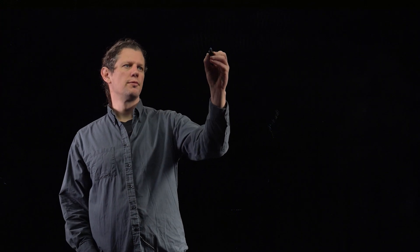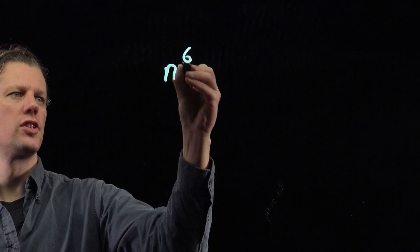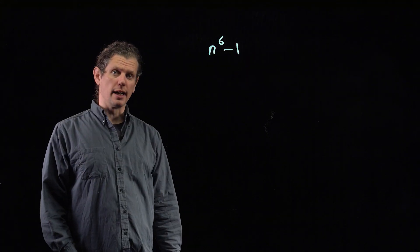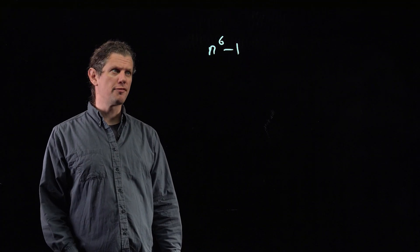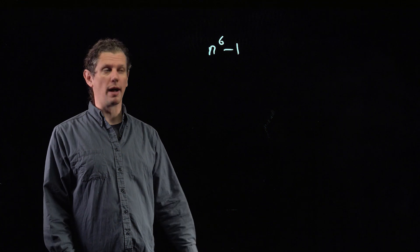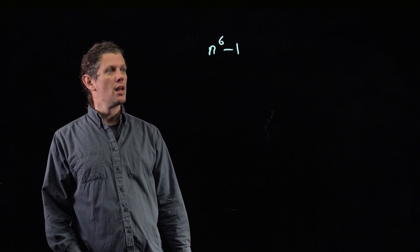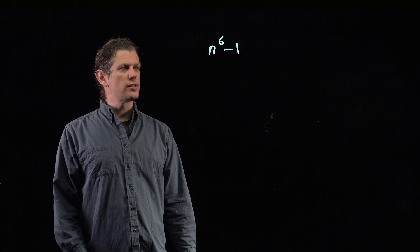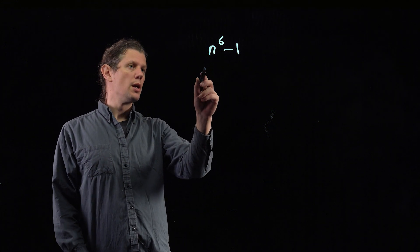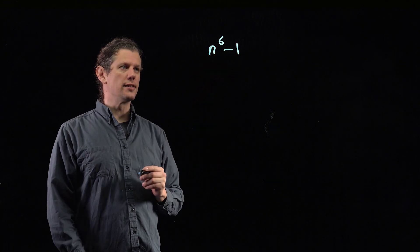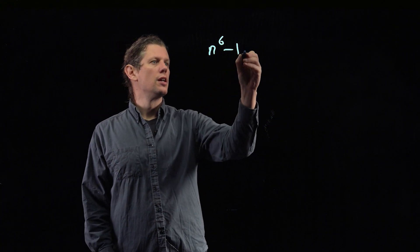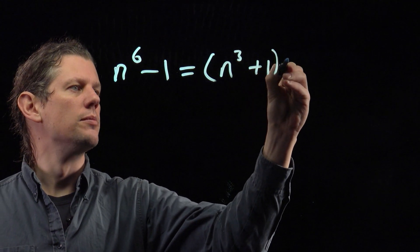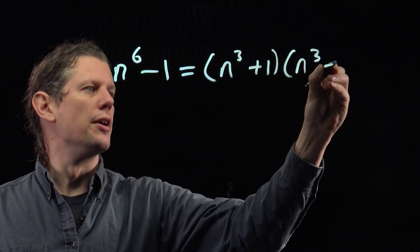This problem asks about primes which are factors of n⁶ - 1. As a result, it's a good idea to start by factorising n⁶ - 1 to understand more about what primes might divide it. If we try to do that, the first thing we notice is that this is a difference of two squares because n⁶ is the square of n³. So we can write this as (n³ + 1)(n³ - 1).